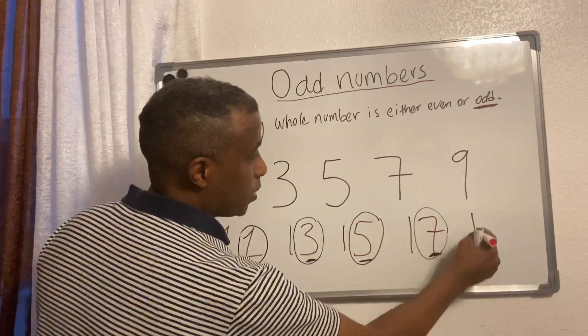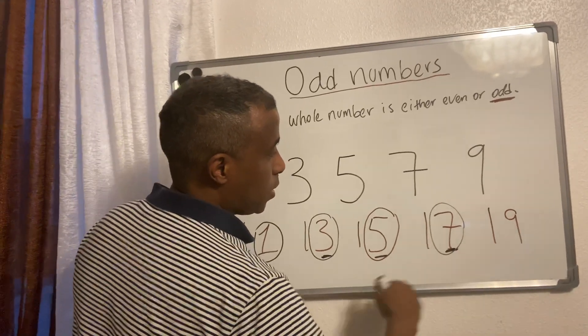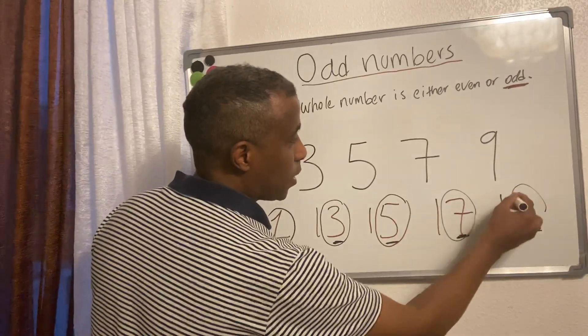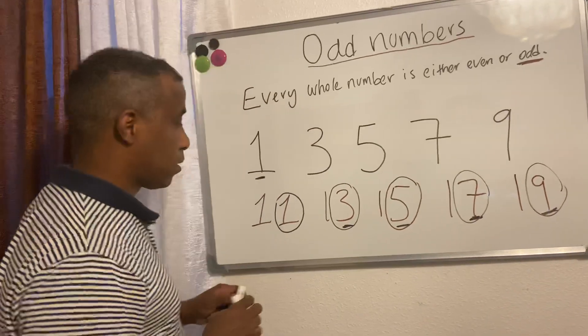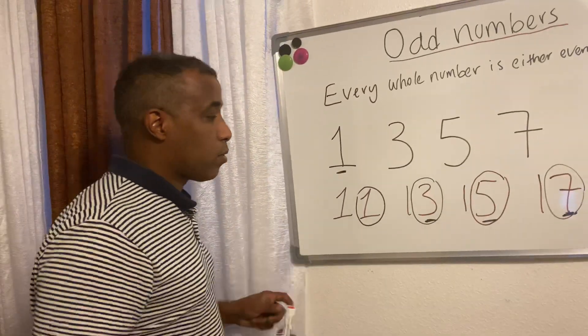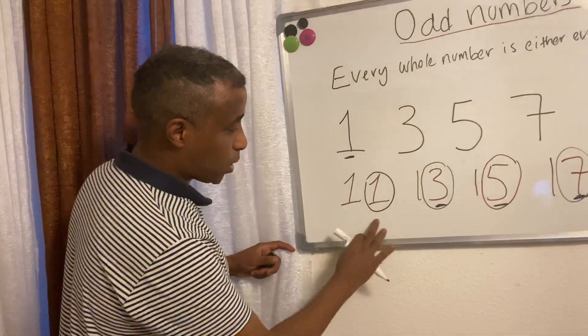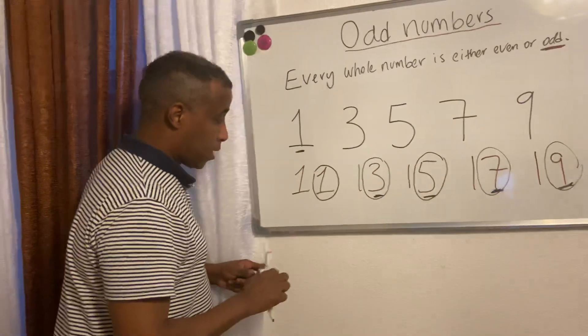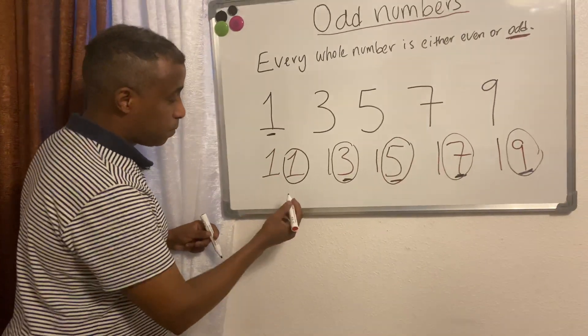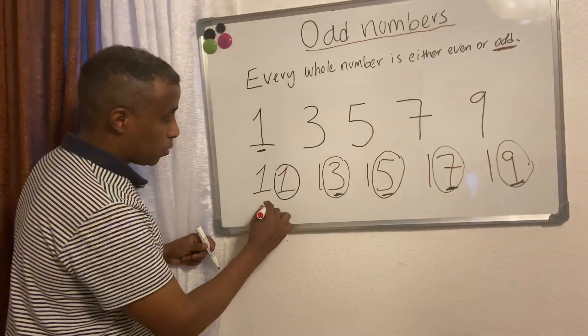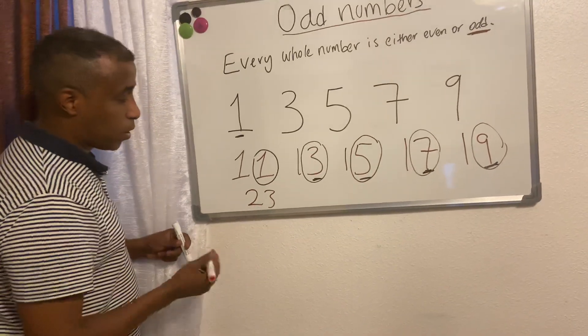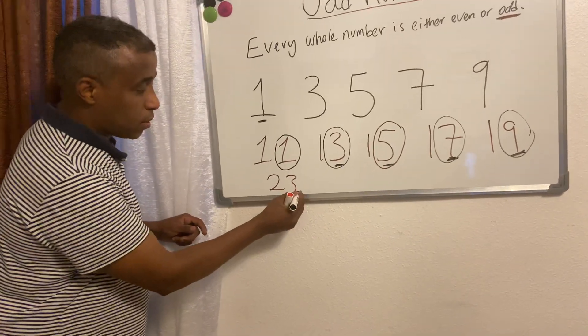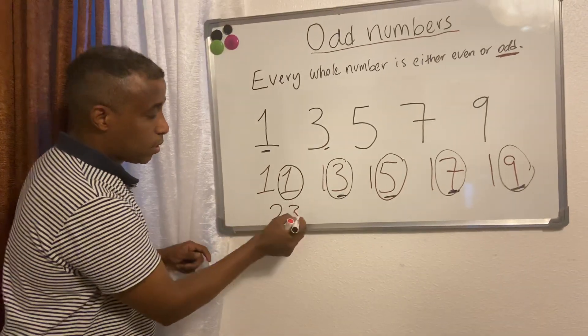19: 9 is odd, circle it. 19 is odd. That's how you recognize it. I'm gonna try to squeeze a couple of numbers here. Let's say 23. Look, 3 is odd. We know number 3 is odd, and